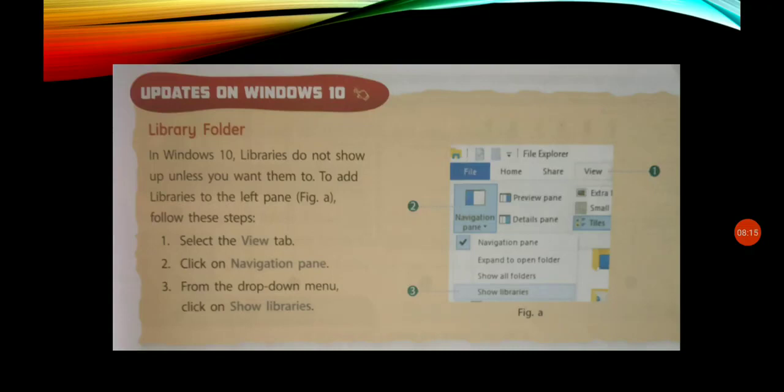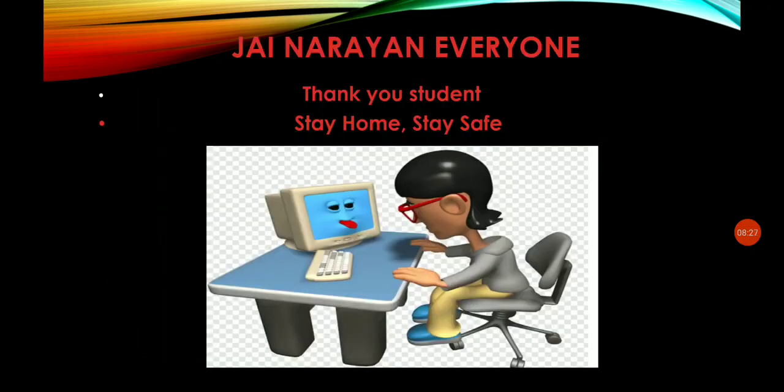To show the library in Windows 10, first click on the View tab, click on the Navigation Pane, then from the drop-down menu click on Show Libraries. Your library screen will then be visible. Thank you so much. I hope today's class was understandable, and if you have any queries, please ask me.